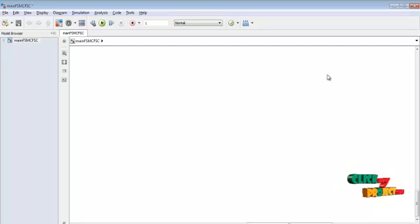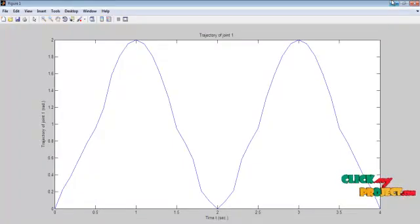After arranging that, we connect the simout block. That simout block purpose is that value is fed into the workspace. After that, that workspace is fed into the M file coding. So from the M file coding we draw the various output waveforms.